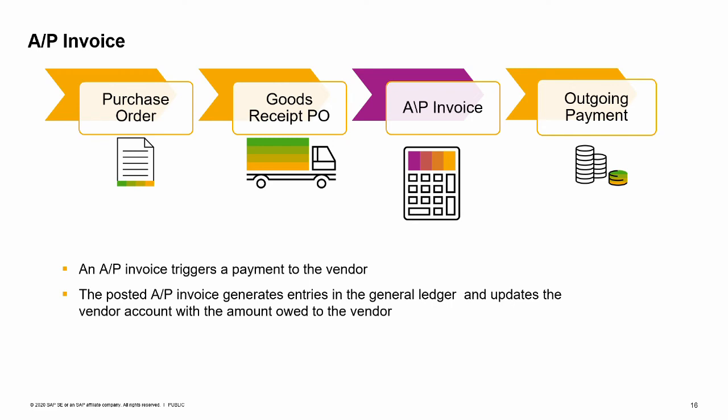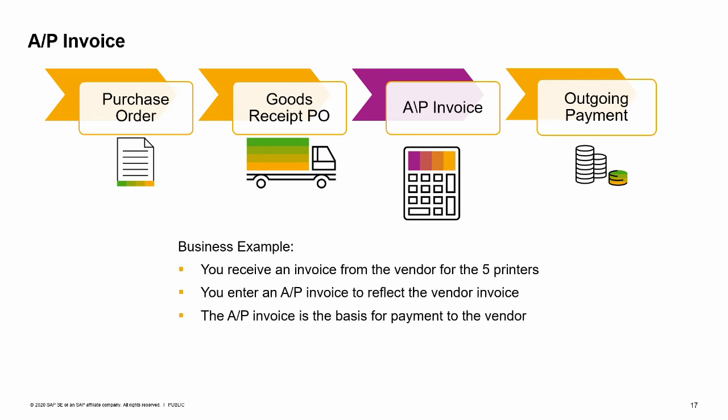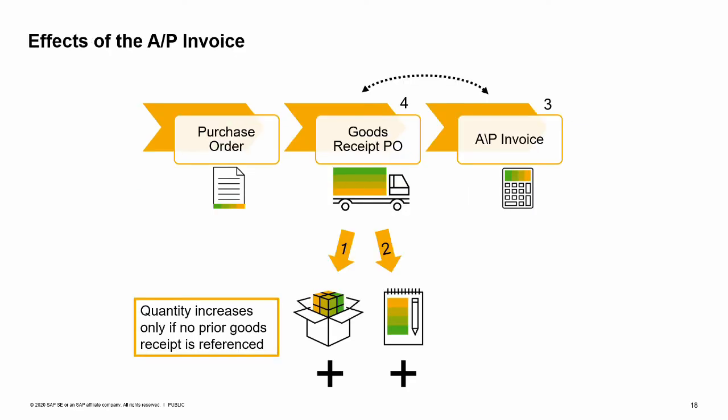The posted AP invoice generates entries in the general ledger and updates the vendor account with the amount owed to the vendor. We previously ordered and received five printers from our vendor. Now we receive an invoice from the vendor for the five printers. We enter an AP invoice to reflect the vendor invoice. The AP invoice in SAP Business One becomes the basis for the payment to the vendor.